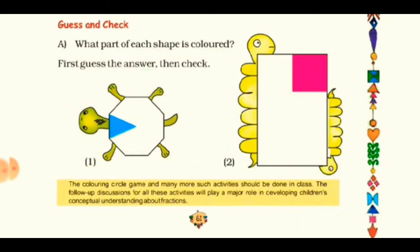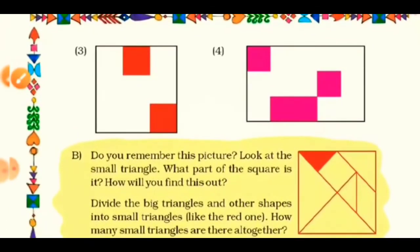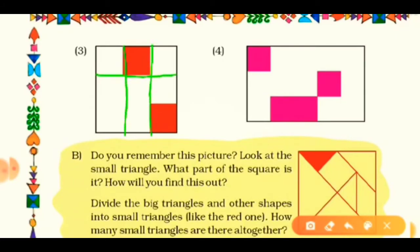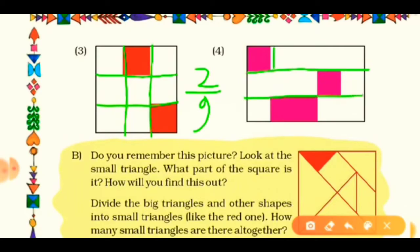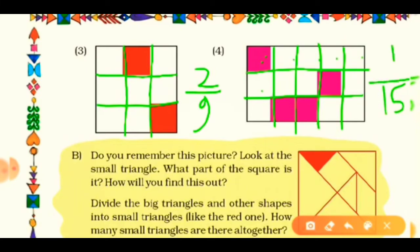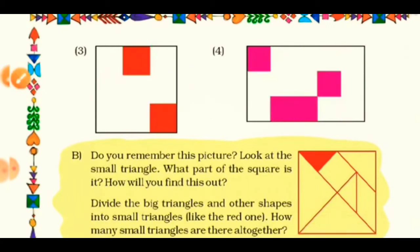For the third shape, draw division lines to divide the whole square into equal parts. There are nine equal parts and two are colored, so it is 2/9. In the fourth picture, many parts are colored. Count the square boxes: one, two, three, four, five equals fifteen total parts. One, two, three, four parts are colored, so it is 4/15.